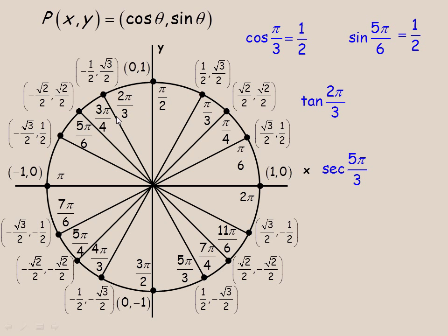The tan of 2π/3, again, we would take the sine of 2π/3 and divide it by the cos of 2π/3. And of course, the two is divided again, and we get negative √3.